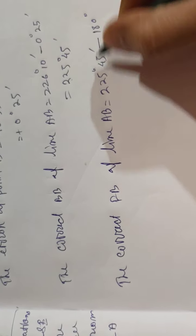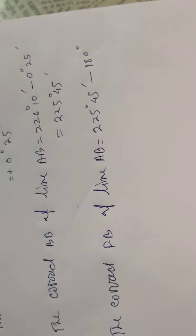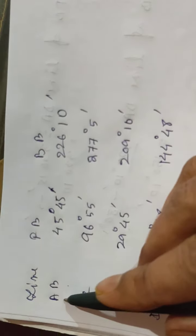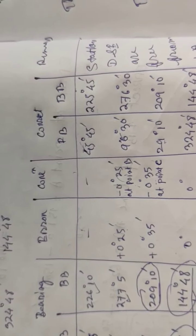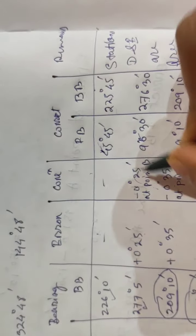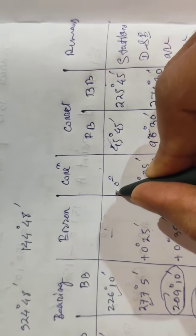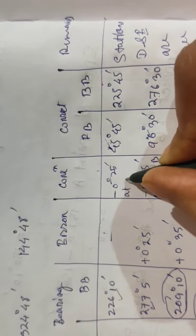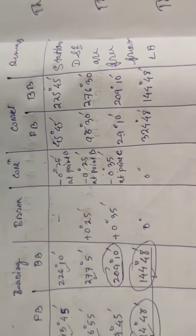This gives 45° 45', which is exactly the given value in the question. So there is no correction needed at point A — there is no error at point A. The correction of minus 0° 25' was applied at point B, but at point A there is no correction. This completes the solution.